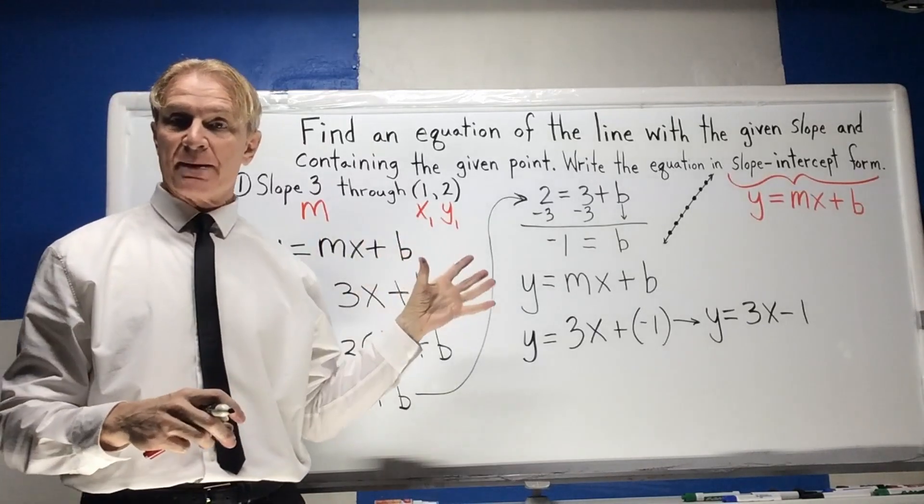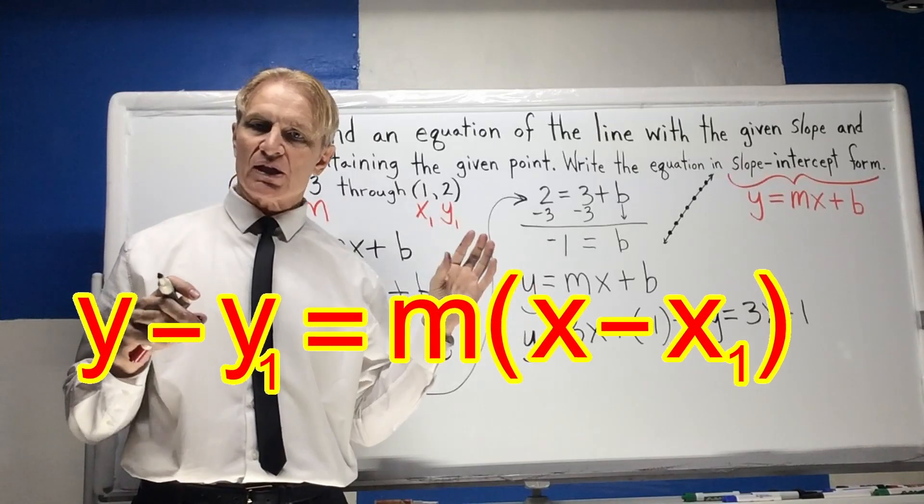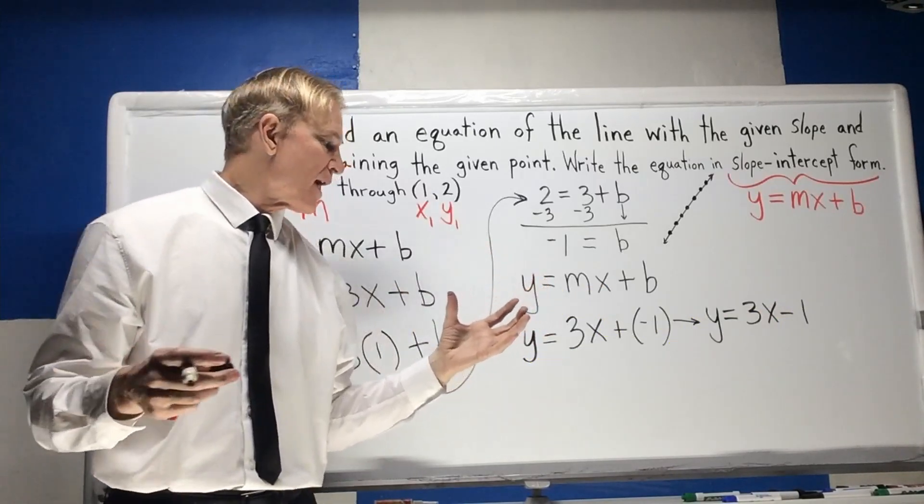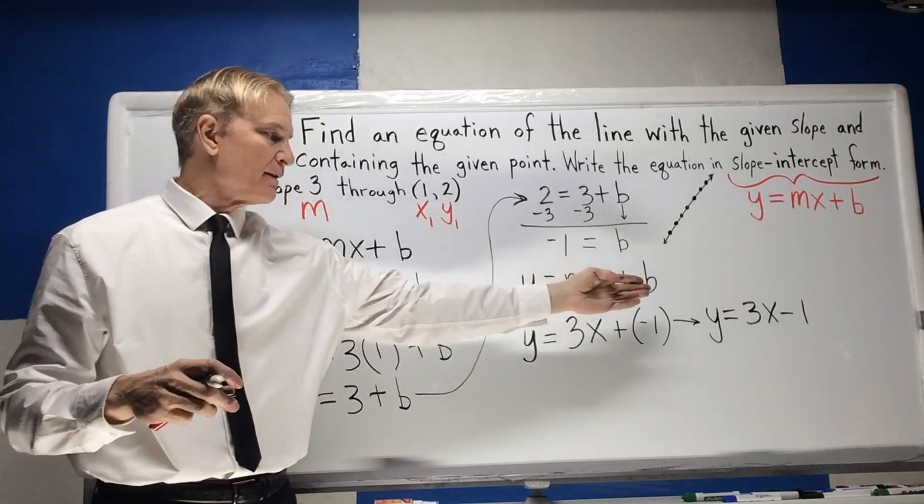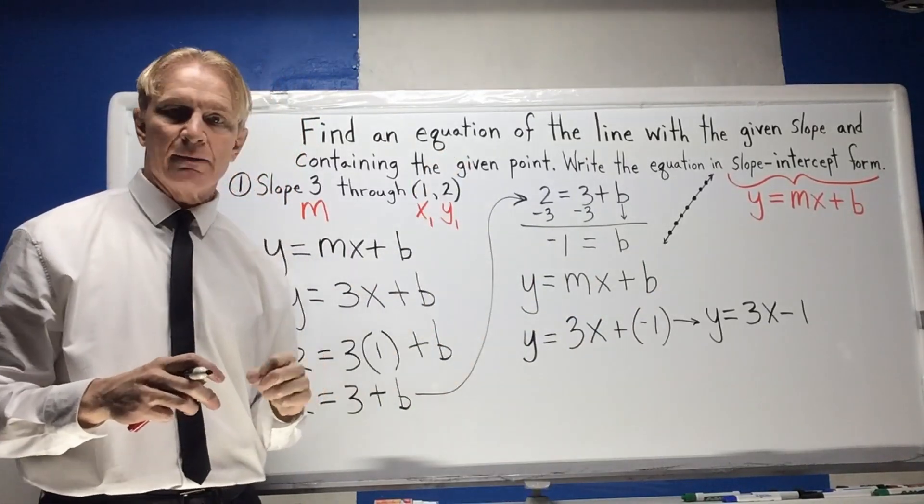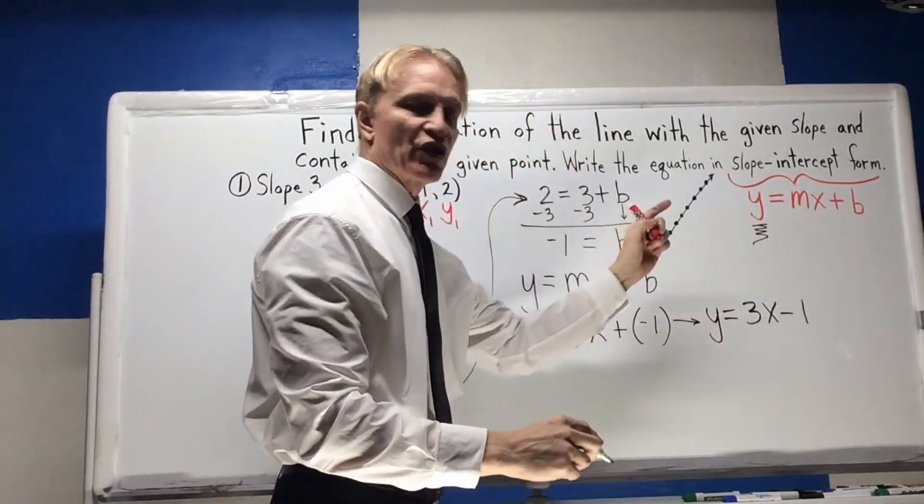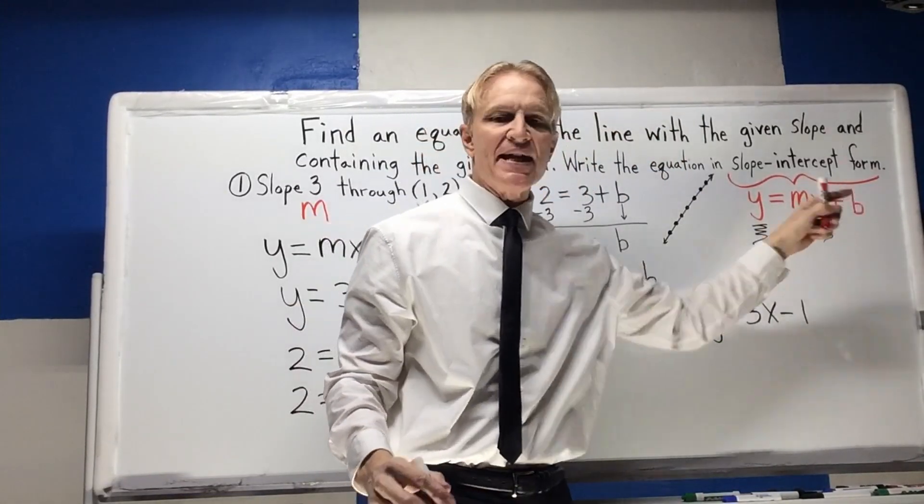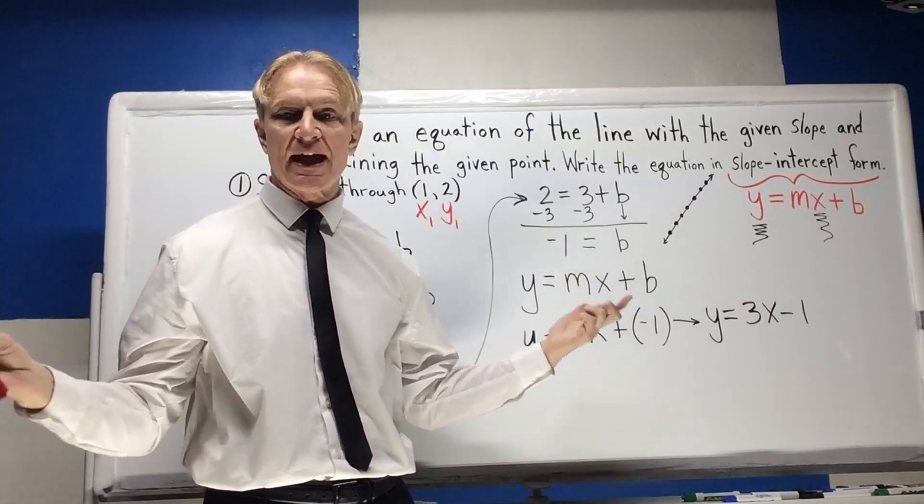I like this method the best because then I don't have to memorize point-slope form in order to get the problem done. I can just use my point temporarily to get the b, the y-intercept, and then just plug everything back in. But just recall that that y in the final analysis is just going to be y, the x is going to be x, and the m and the b are constants. So once you find them, that's what they are forever.